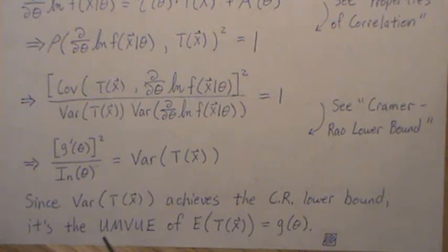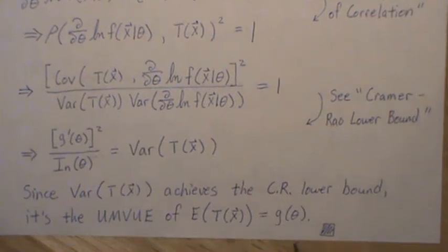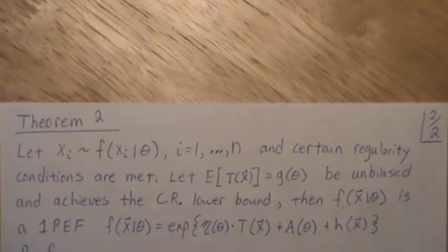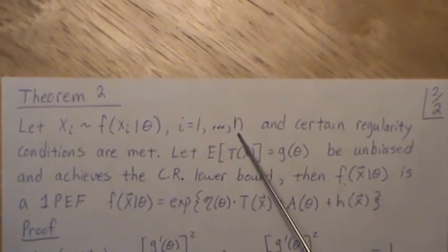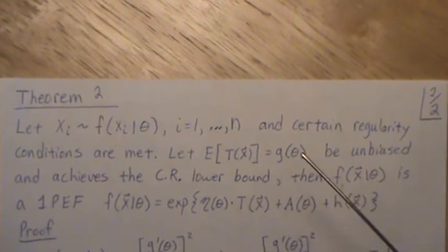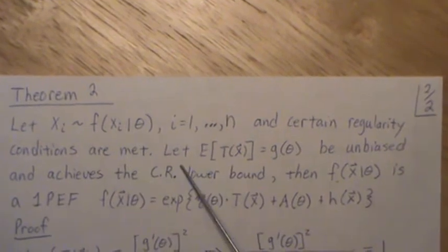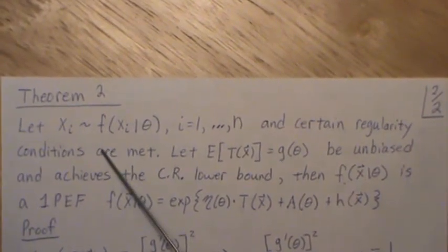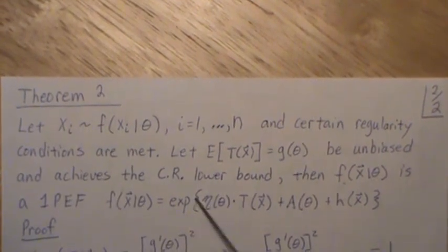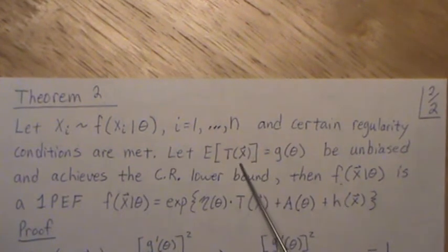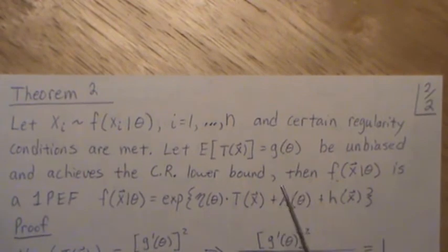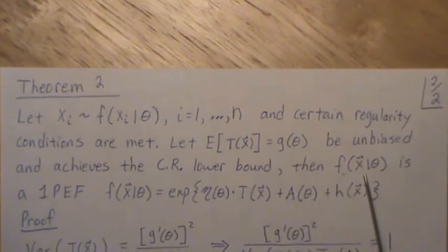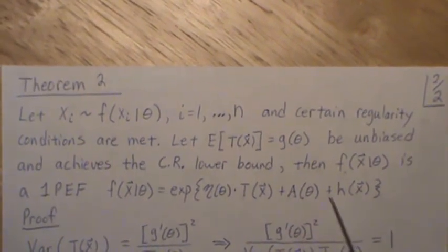It is the uniformly minimum variance unbiased estimator of G of theta, and that's what we wanted to show. Now the next theorem: let X be distributed with this distribution, and we take a sample of size n. We assume F meets some regularity conditions — the key one being that we can pass the derivative through the integral sign. Let the expected value of our estimator T of X equal G of theta, so it's unbiased, and it achieves the Cramér-Rao lower bound. Then F of X is a one-parameter exponential family with this distributional form.